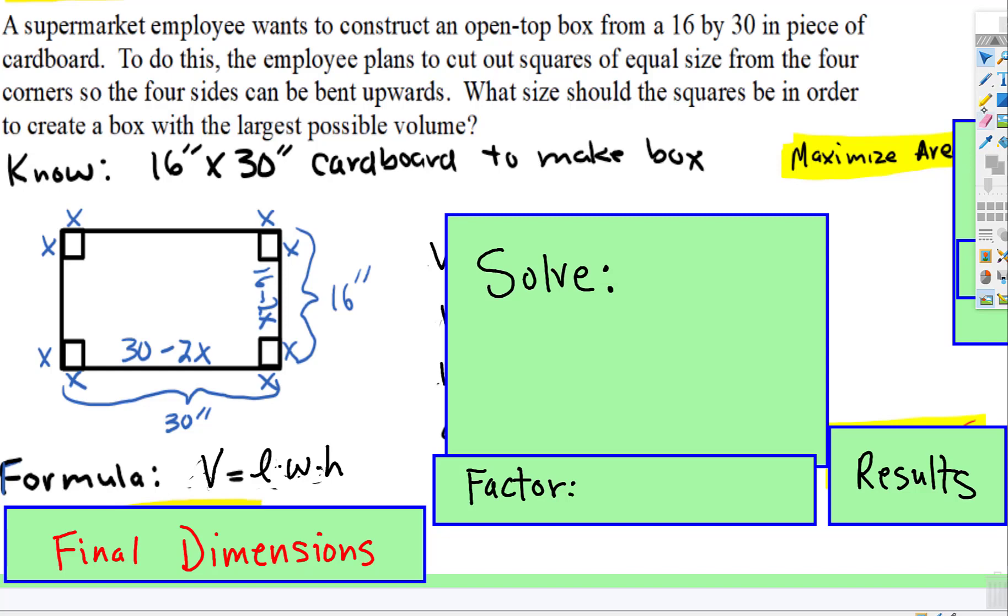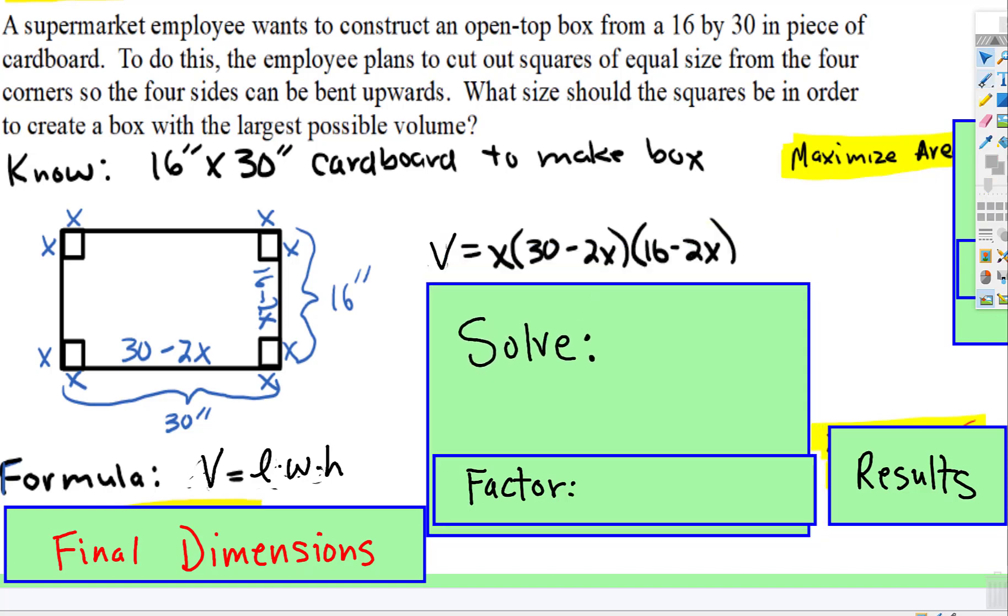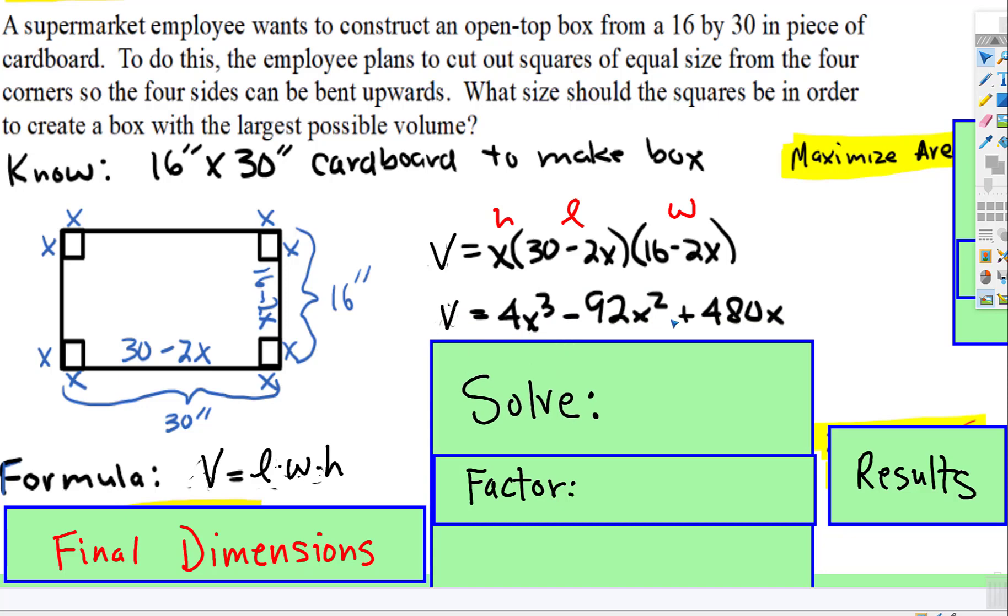And then, we have volume. And since it's all x, we don't have to worry about getting a y by itself, because this is already completely in terms of x. So, here's our length, here's our width, here's our height. We multiply all of that out, and we get this.